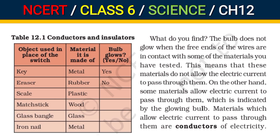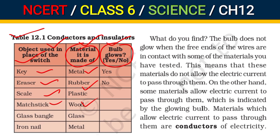After testing, you have to create a table 12.1, which has three columns. First column: the name of the objects used. Second column: the material the object is made of. Third column: whether in the circuit the bulb glowed or did not glow.